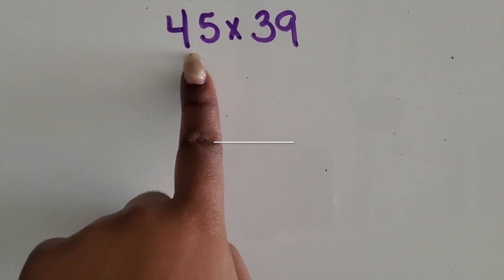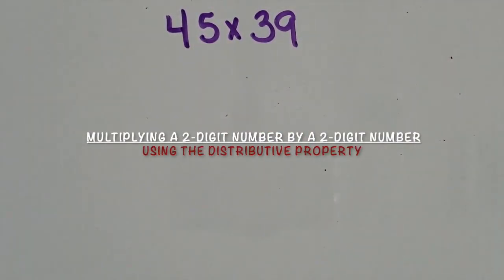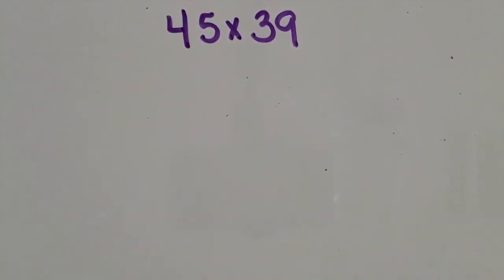We're going to multiply a two-digit number by another two-digit number using the distributive property for multiplication. I'm going to show you two different ways that you can decompose these numbers.